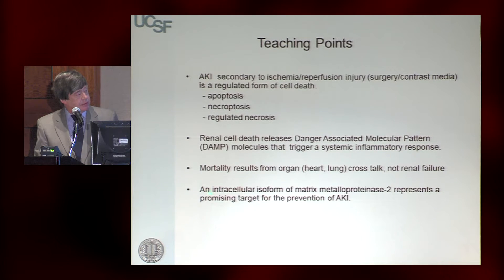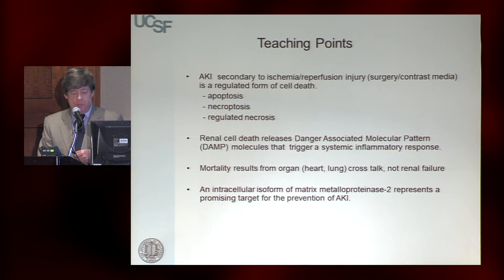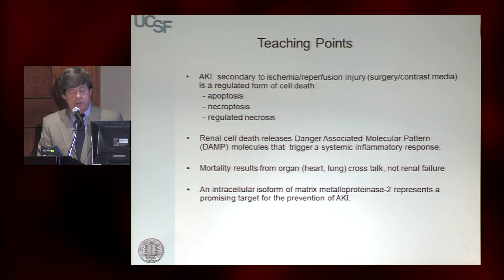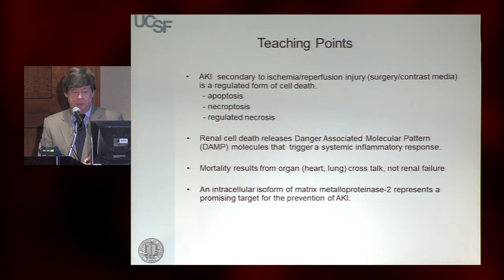I'll talk about some new work from the last few years where I think we've identified a potential druggable target — a term that's become very popular when pitching a new product. We've actually isolated an intracellular isoform of matrix metalloproteinase 2, an enzyme familiar in vascular remodeling to this audience, which looks like it is a predominant cause of acute tubular necrosis.